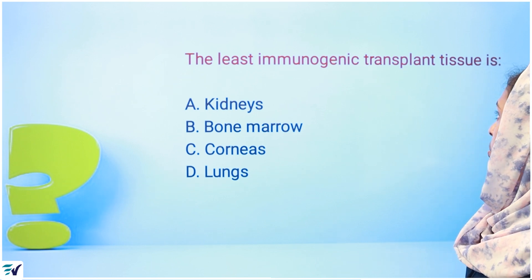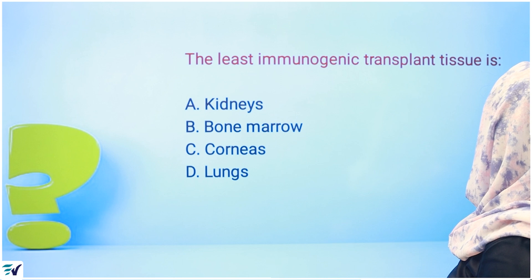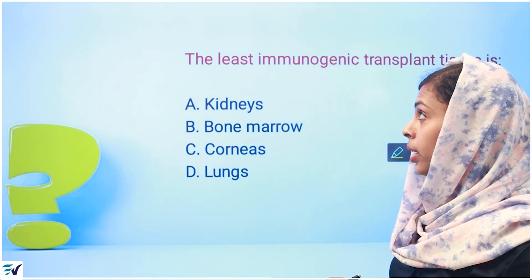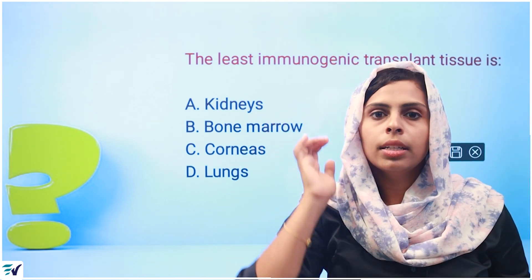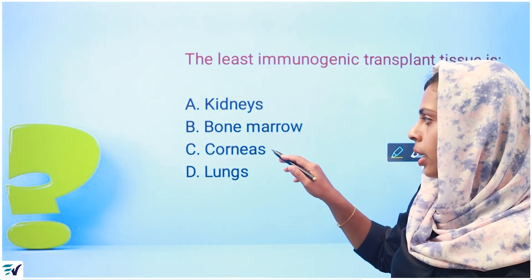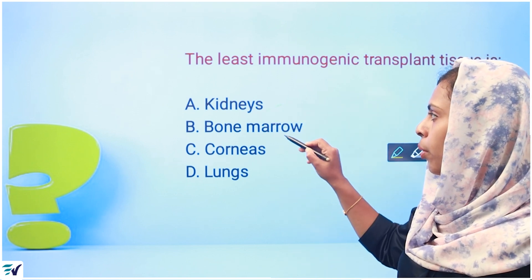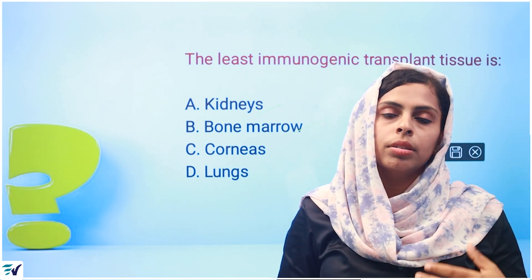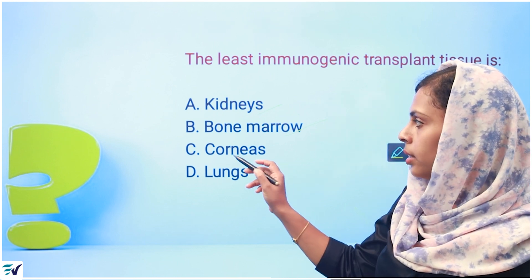Next question: the least immunogenic transplant tissue is? The options are kidney, bone marrow, cornea, and lung. Kidney, bone marrow, and lungs are subject to graft versus host rejection. The answer is cornea.